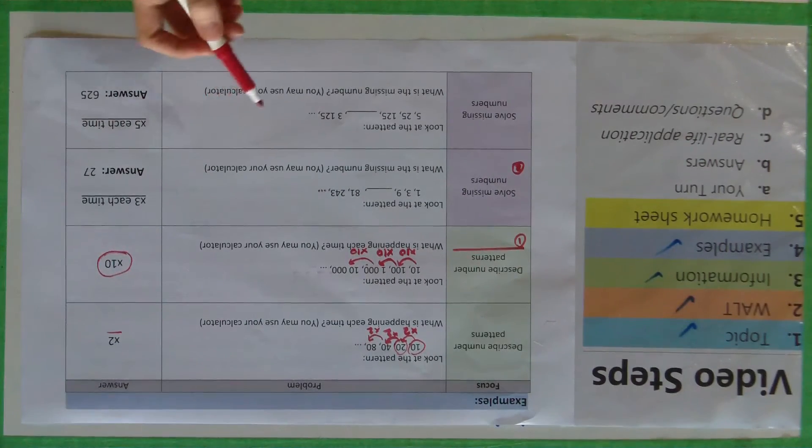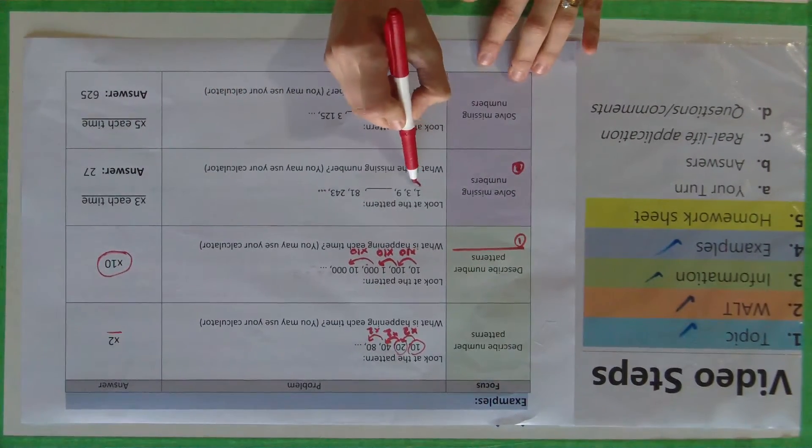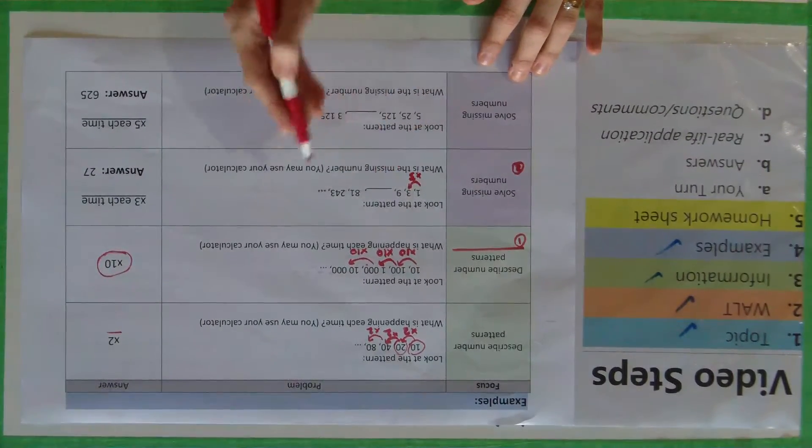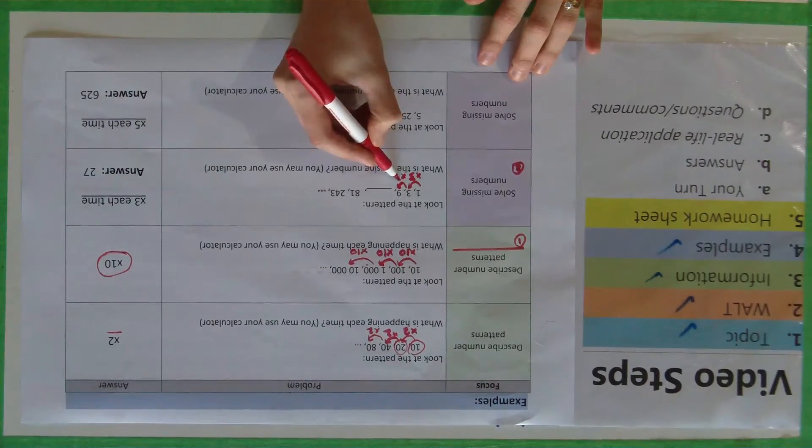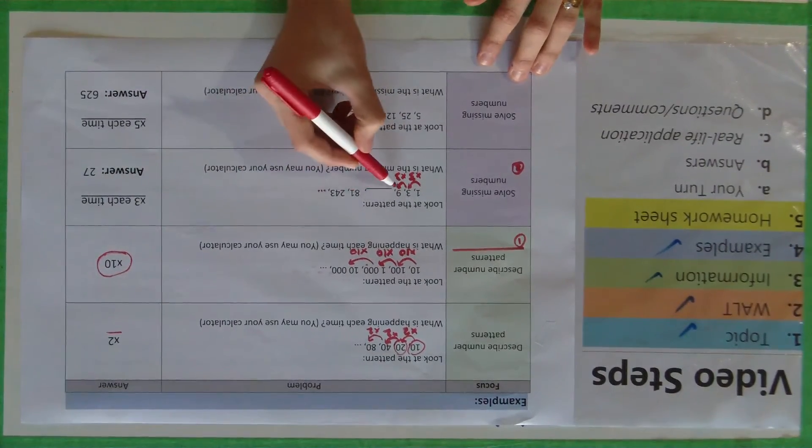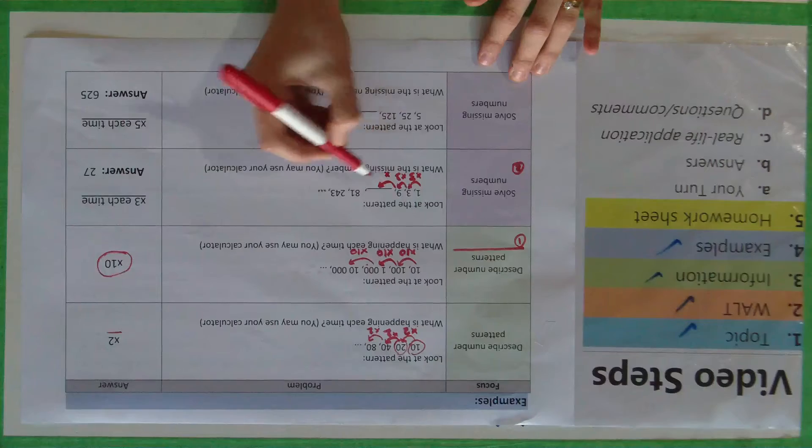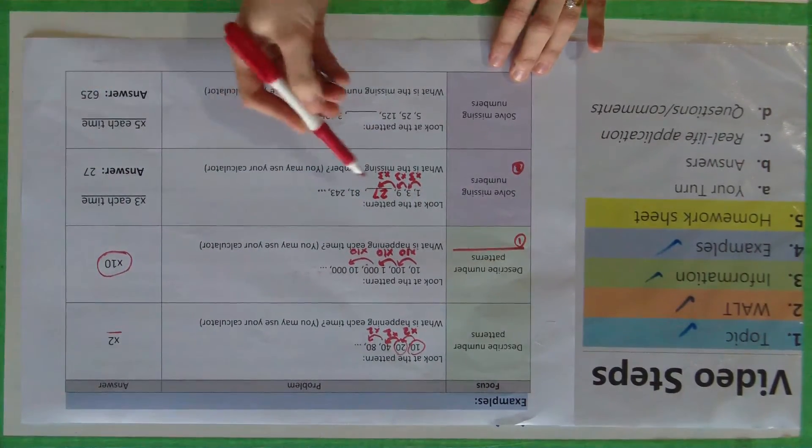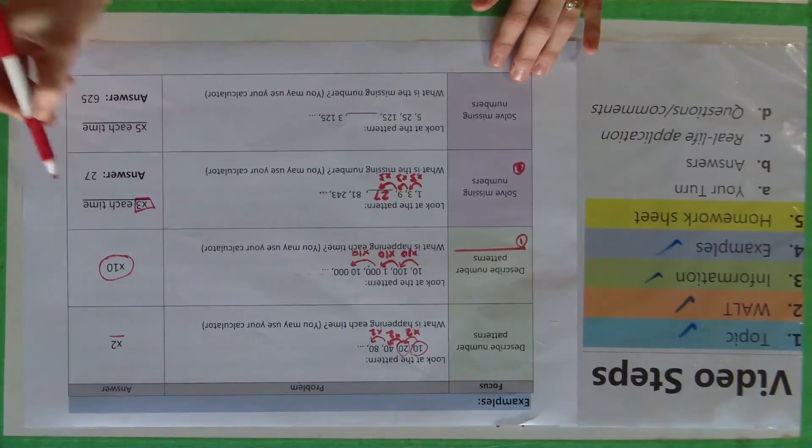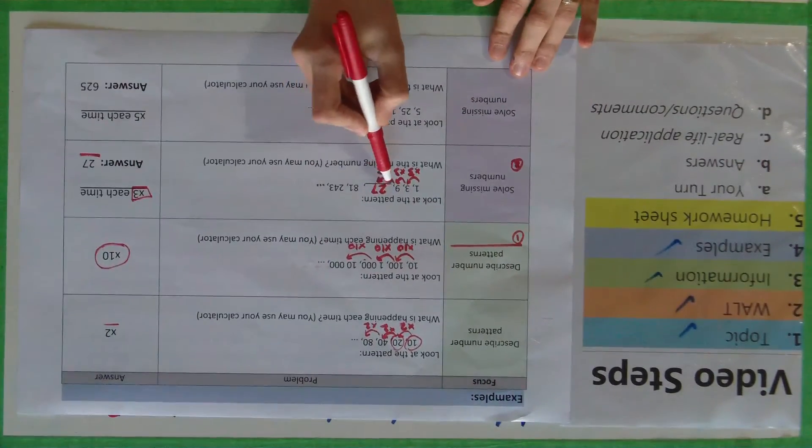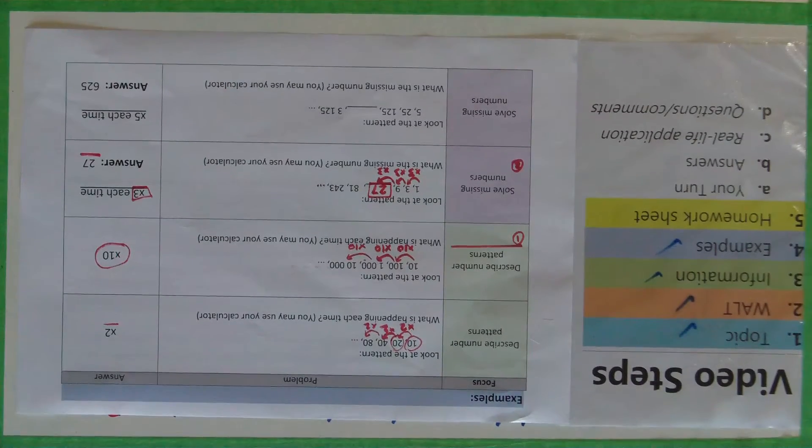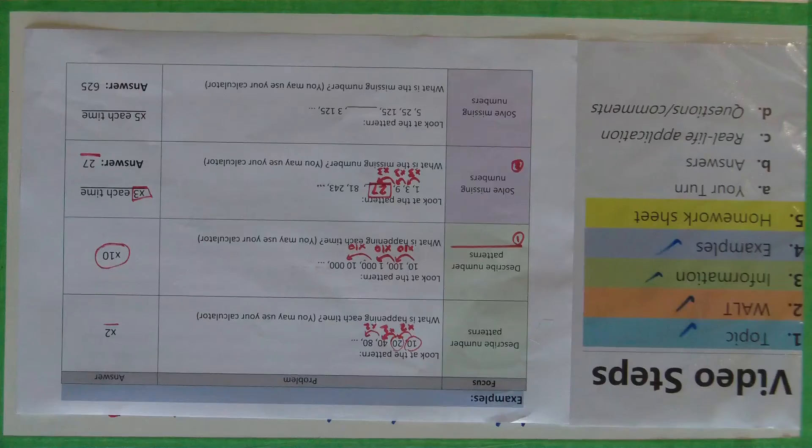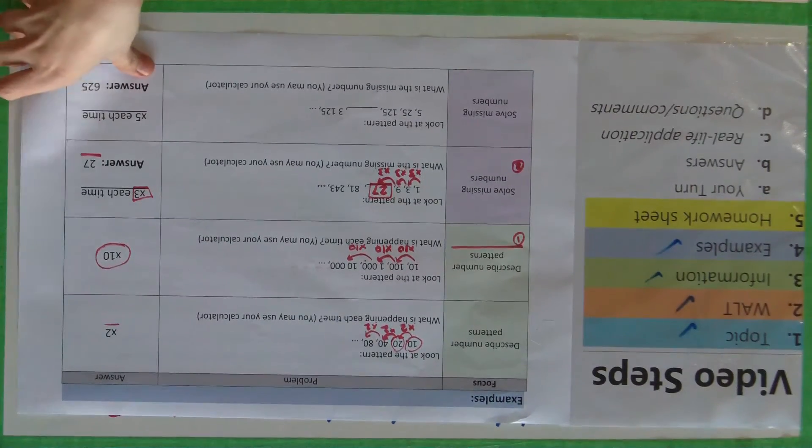So to solve this one you need to actually work out well what is it going up by each time? So here I can go, well I know 1 times 3 is 3, so 3 times 3 should equal 9, yes, and then I'll figure out the missing number by going 9 times 3 is 27, so that's my missing number. You're multiplying by 3 each time and your answer is 27. Please have a look at the other examples on this sheet if you need some more help.